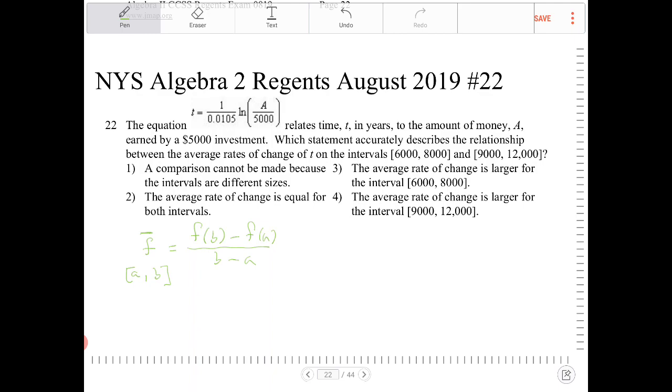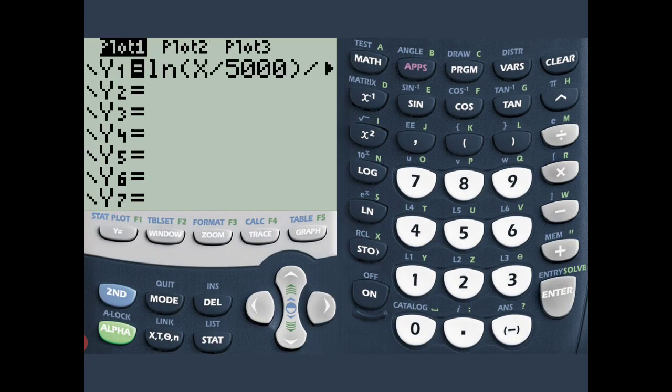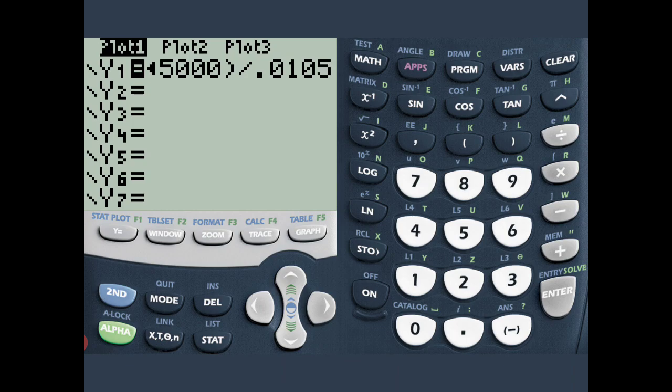So I've entered this equation into the calculator. If you have not done so yet, you should also do that. So I entered in ln x over 5,000. The variable to use on the graphing calculator is x, so we're not going to put in a. It's going to be x.